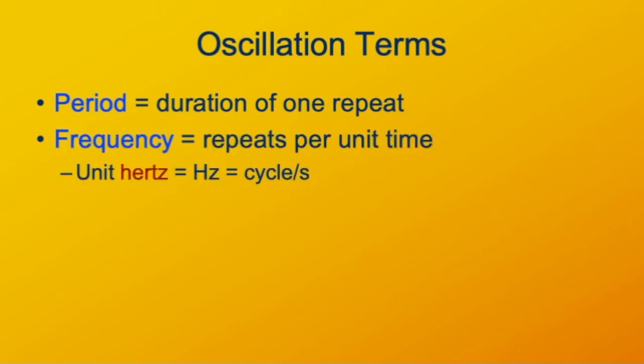The frequency is the reciprocal of period, how many repeats happen per unit time. The unit we usually give for frequency is the hertz, which is a cycle per second.